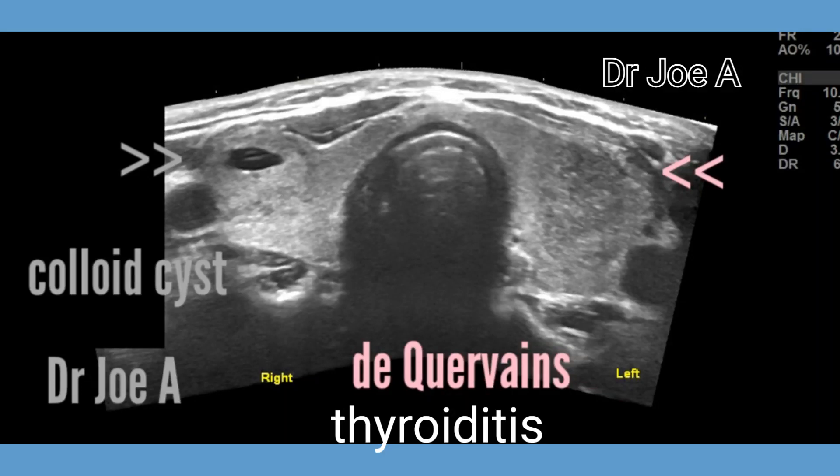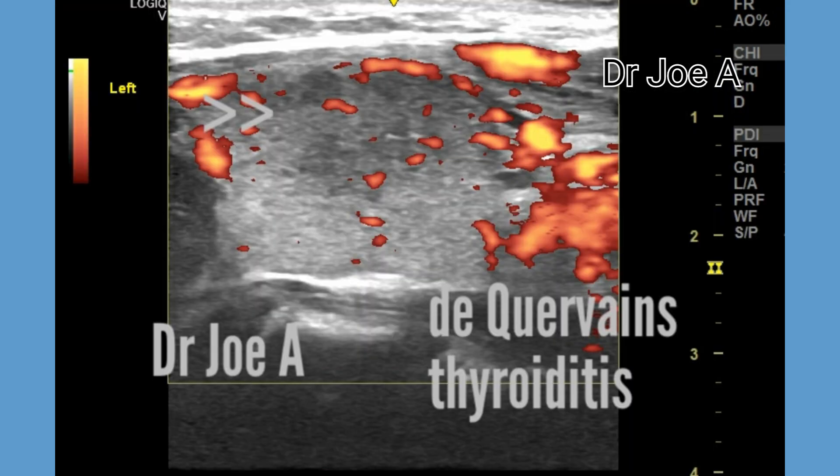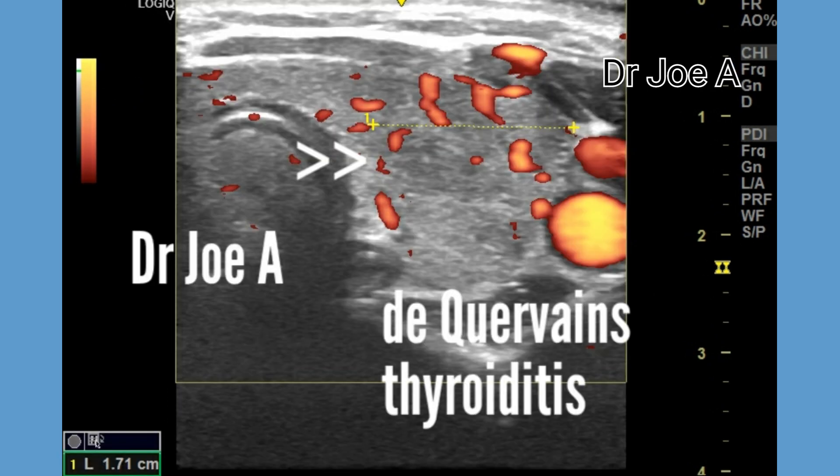This is a case of De Quervain's thyroiditis, also known as subacute granulomatous thyroiditis, affecting the left lobe of the thyroid in this adult female patient. In addition, there is also a colloid cyst of the right lobe of the thyroid.